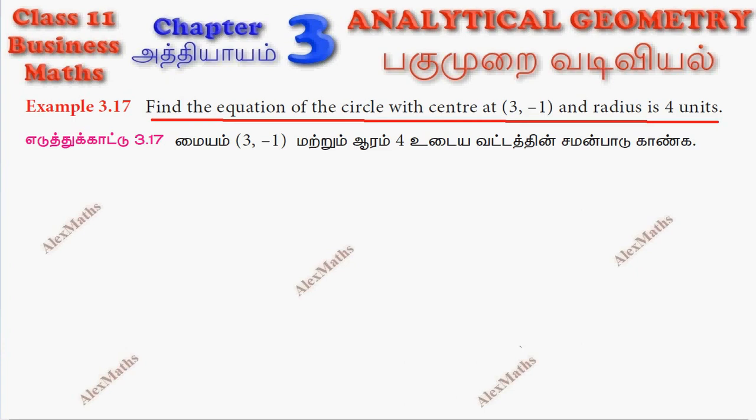So center is denoted h, k and radius is r. We get a formula: (x - h) whole square plus (y - k) whole square equal to r square.